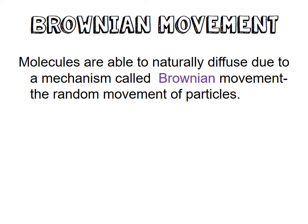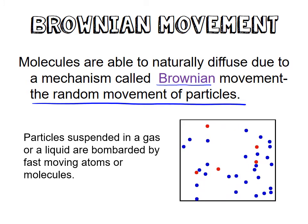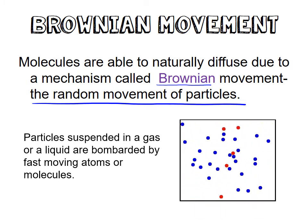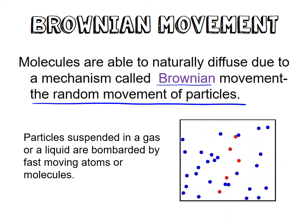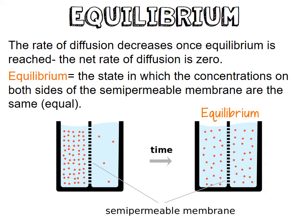Molecules are able to naturally diffuse due to a mechanism called Brownian movement, which is simply the random movement of particles. Particles suspended in a gas or a liquid are bombarded by fast-moving atoms or molecules. The rate of diffusion decreases once equilibrium is reached — the net rate of diffusion is zero. Equilibrium is the state in which the concentrations on both sides of the semipermeable membrane are the same or equal, and when the amounts of particles on one side equal the other, they are at equilibrium.